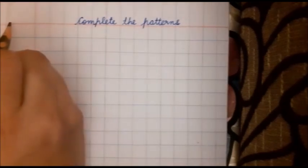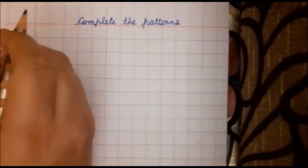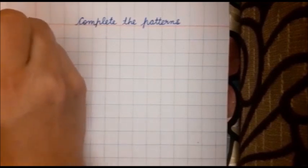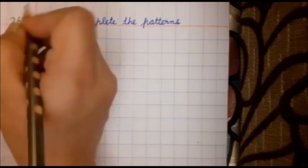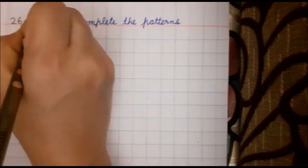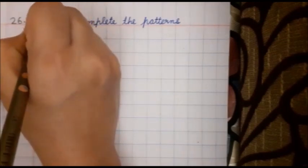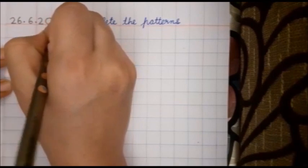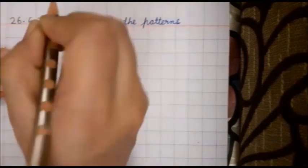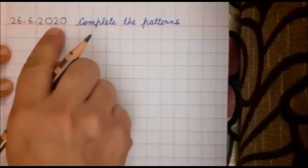We will write the date on the top. Today is June 26th. 26 dot, touch the red line. 6 dot. 20. 20, 20, 20. Write the date like this.